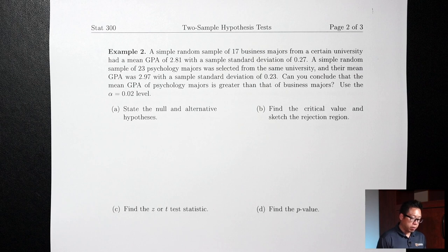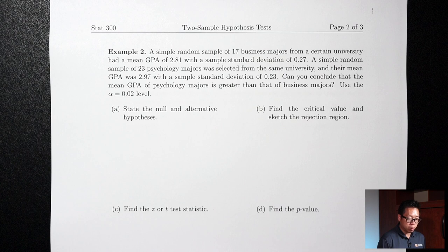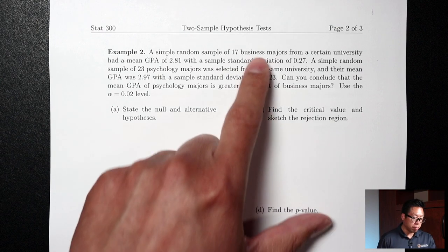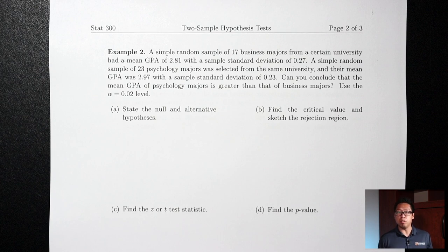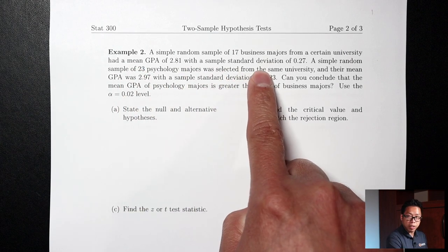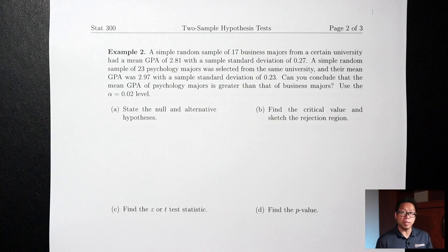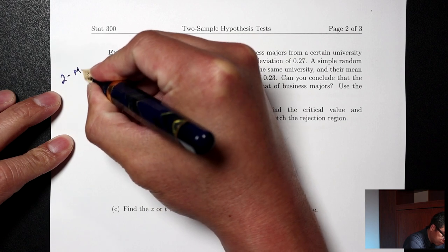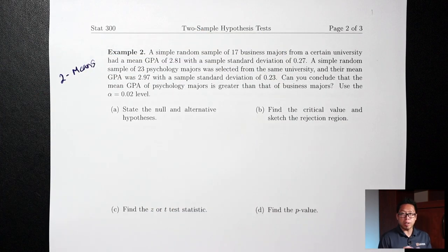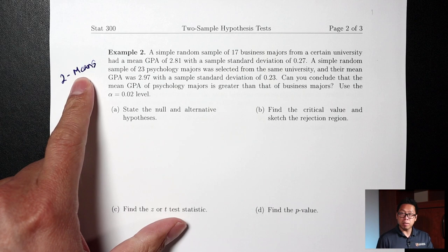Example 2: A random sample of 17 business majors had a mean GPA of 2.81 with a standard deviation of 0.27. A random sample of 23 psychology majors had a mean GPA of 2.97 with a standard deviation of 0.23. Can you conclude that the mean GPA of psychology majors is greater than that of business majors? Use alpha = 0.02. We have two groups, and the words 'mean' and 'standard deviation' appear — so this is a two-means situation, and we use T's.